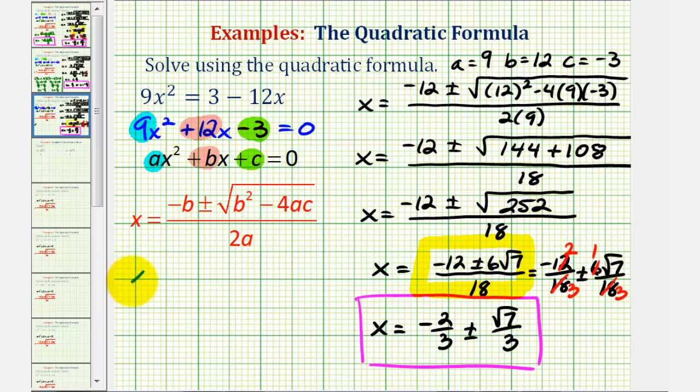So we could write this as x equals 6 times the quantity negative 2 plus or minus square root 7. And then we know that 18 is equal to 6 times 3. Now because our factors are being multiplied, we can simplify this. 6 over 6 simplifies to 1.